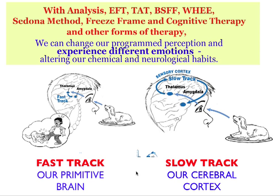When we see something, this can generate a number of different reactions from our brain and from our mind. There is what we call the fast track, which is based on our primitive brain. We see something — say a dog in this case — which has bitten us in the past, and this creates a very quick reaction to save us.